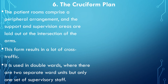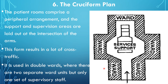The sixth type is the cruciform unit. Patient rooms comprise a peripheral arrangement, and support areas are laid at the intersection of arms. This form results in a lot of cross traffic. It is used in double wards where there are two separate ward units but only one set of supervisory staff.